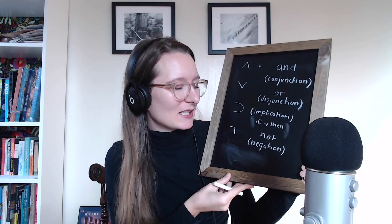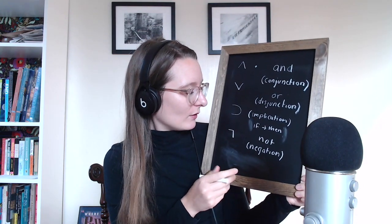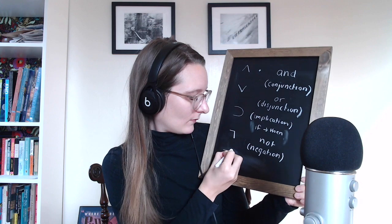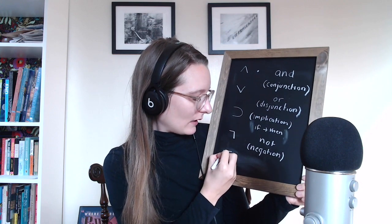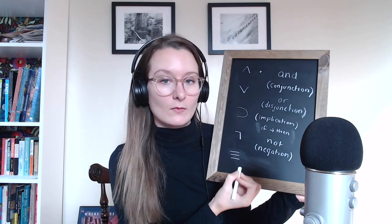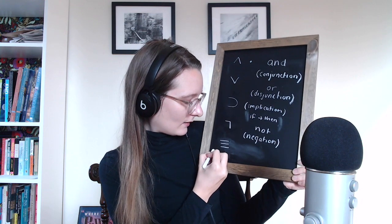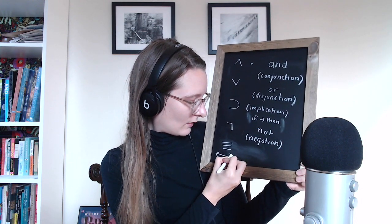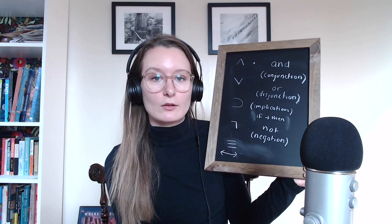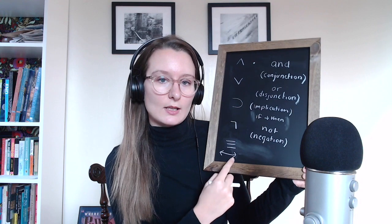I haven't decided if I'm going to show a biconditional yet. I probably should. We're just running out of space. I'll just quickly tell you about a biconditional. So the biconditional is three lines. Sometimes it's also written as an arrow — a two-sided arrow. It can be either one of those.